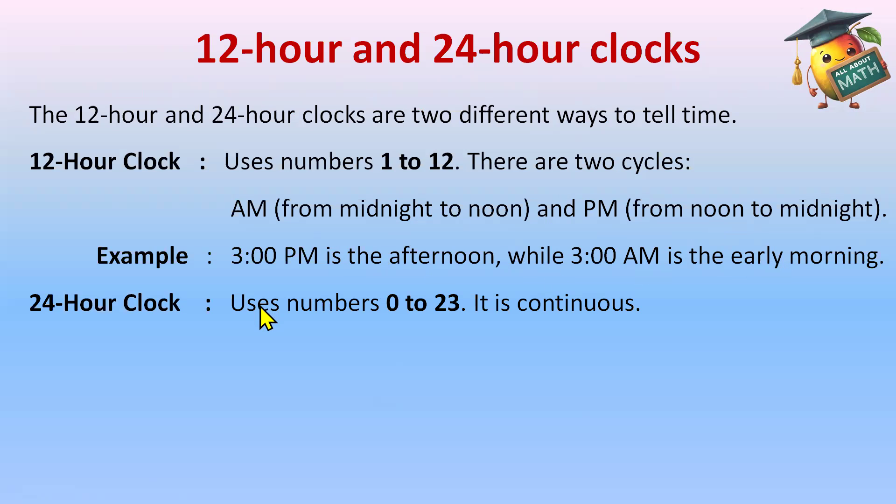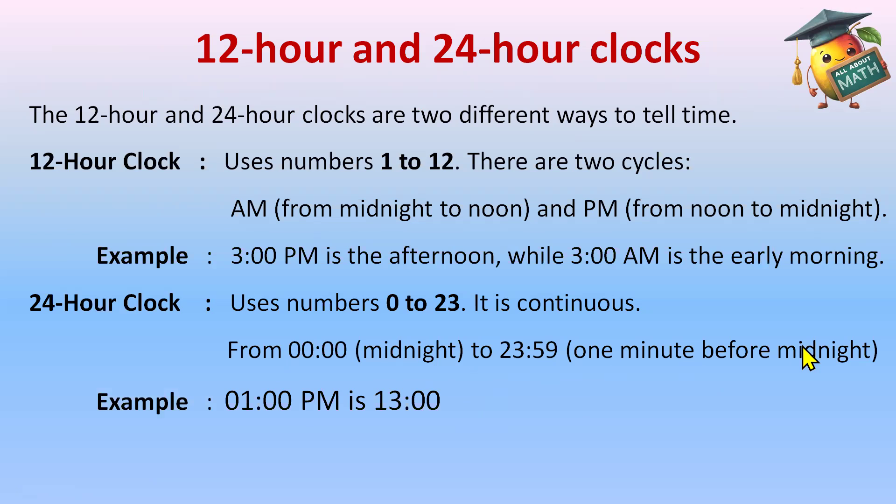24 hour clock uses numbers from 0 to 23 and it is continuous. There are not any cycles in 24 hour clock like we have in 12 hour clock. So 24 hour clock is from 00:00 (midnight) to 23:59 (one minute before midnight). For example, 1 P.M. is 13:00 and 2 P.M. is 14:00 in 24 hour clock.